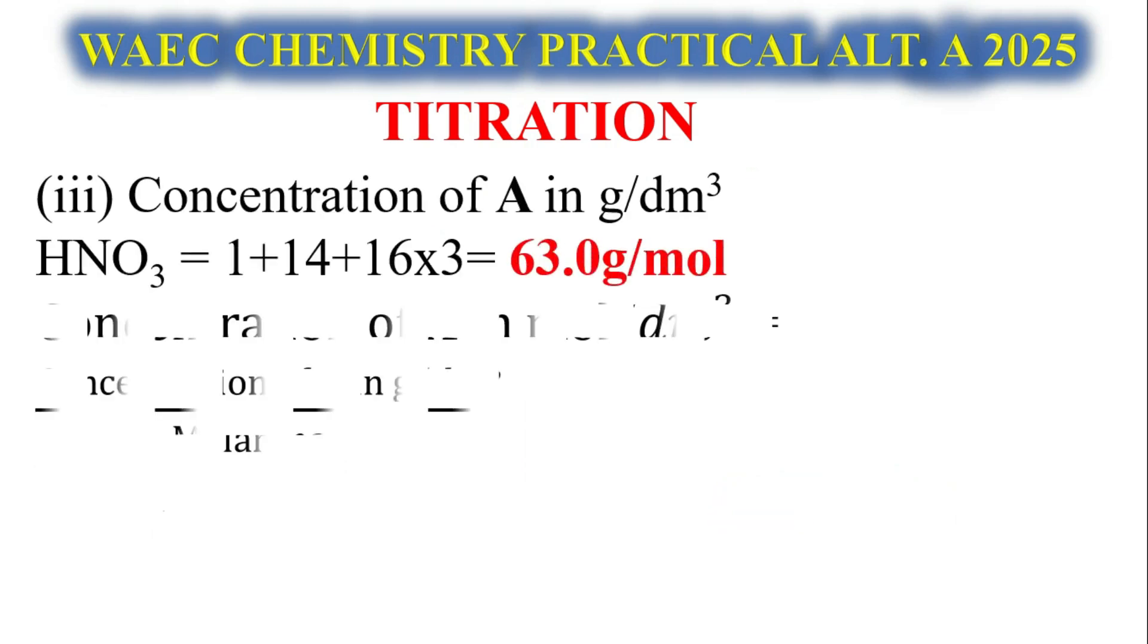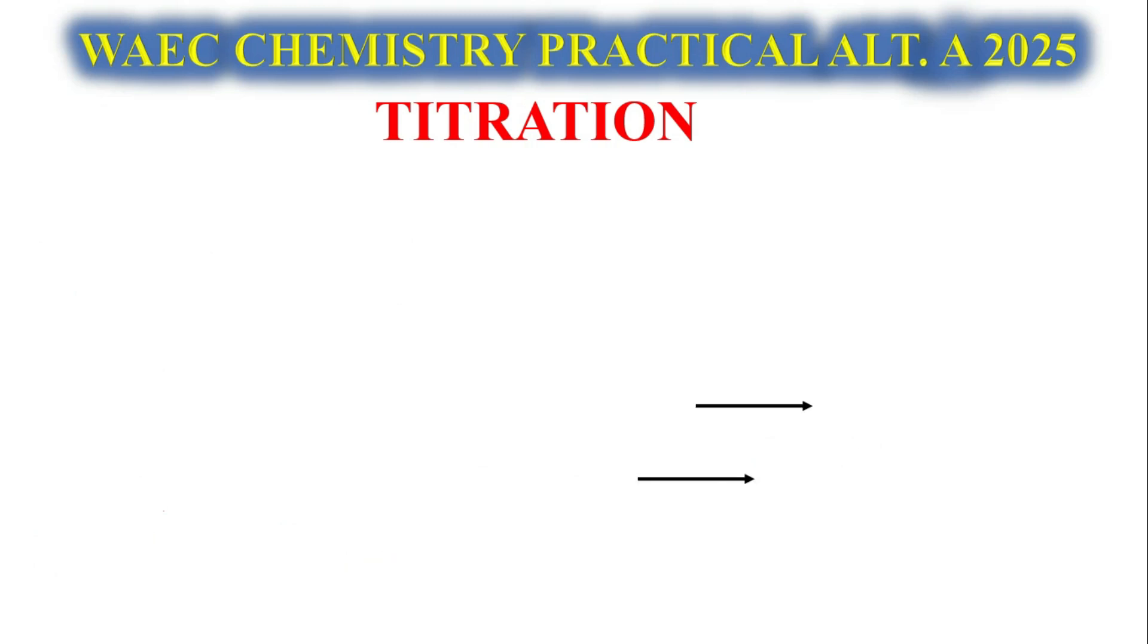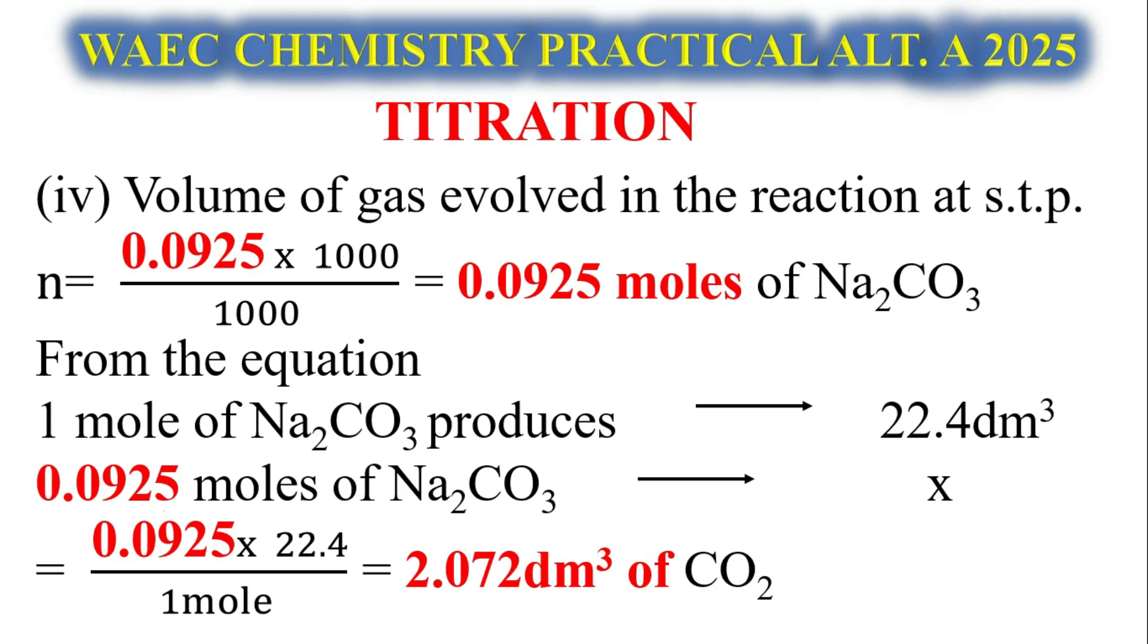Let's look at concentration of A in grams per dm³. Calculate your molar mass of HNO3: 1 plus 14 plus 16 times 3 giving us 63.0 grams per mole. Using that formula, you cross-multiply: 0.177 times 63 gives us 11.5 grams per dm³ of A.